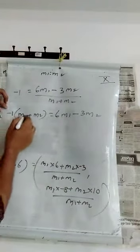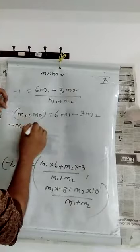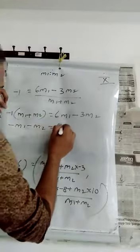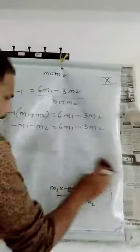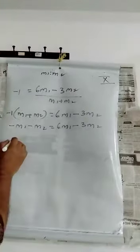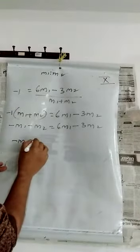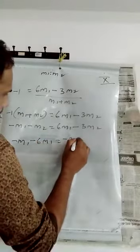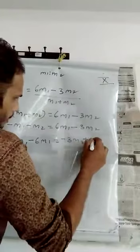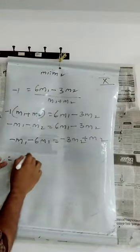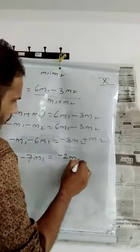So -1 you can take and multiply inside the bracket. -1 into M1 is -M1, -1 into M2 is +M2, equals 6M1 - 3M2. Now you can take the M1 together and M2 together. So -M1, here it is 6M1 is positive, so it will become -6M1 equals -3M2. Here -M2 is going to go +M2.